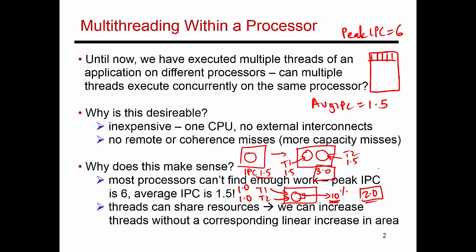SMT is an area-effective way of increasing throughput, and it exploits the fact that most of the resources on the chip are underutilized to begin with.